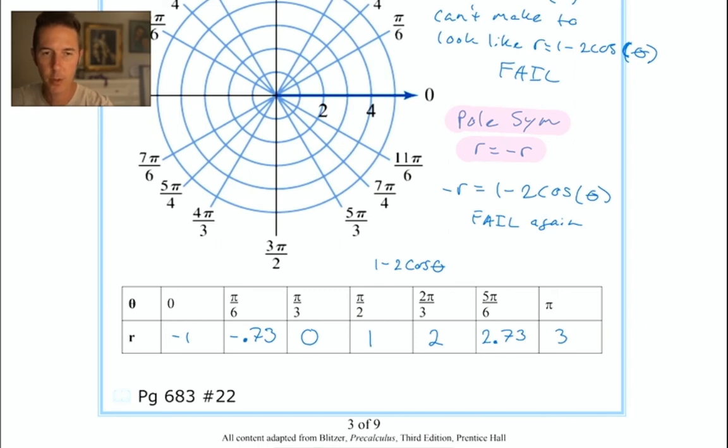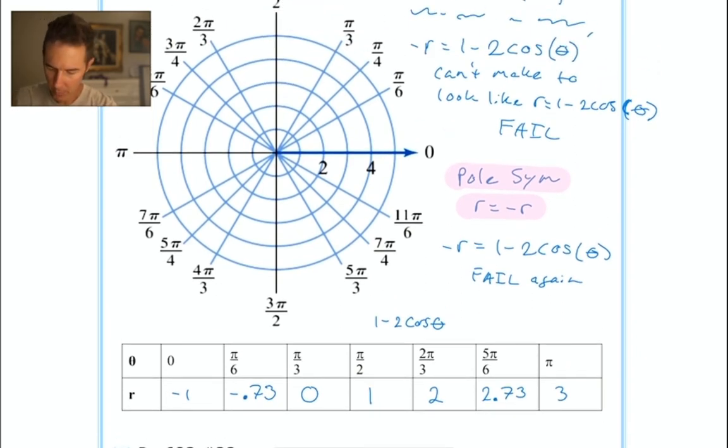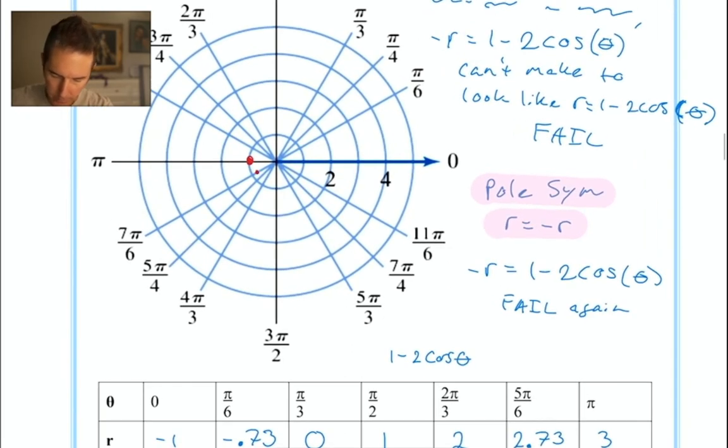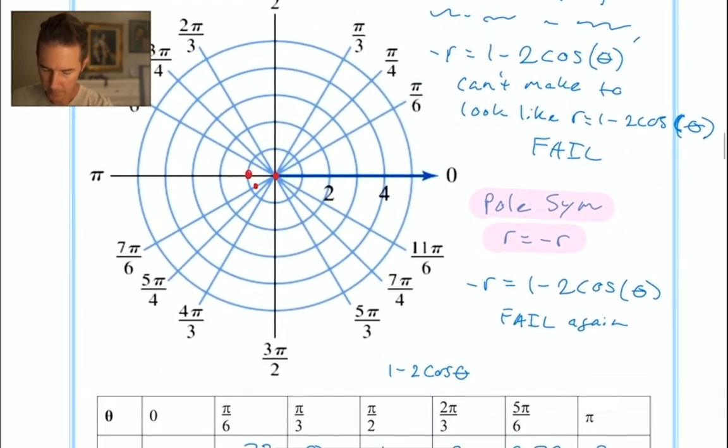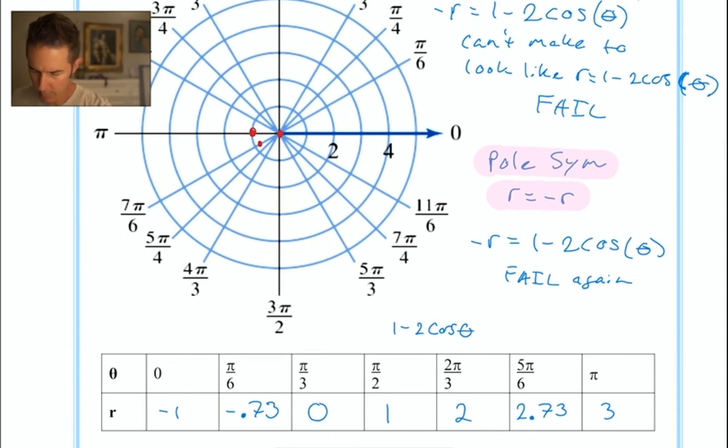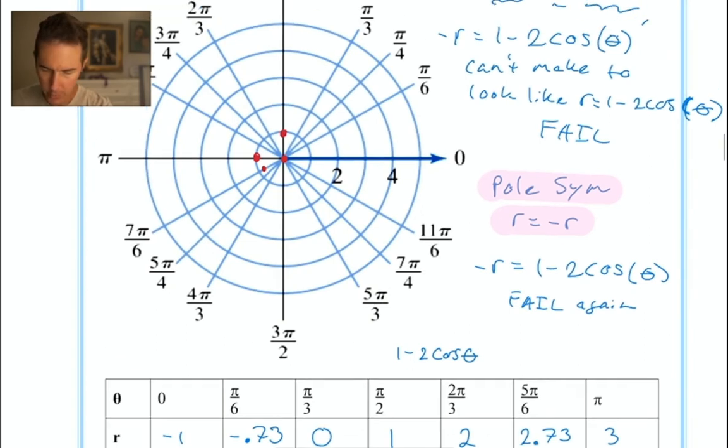I've filled in this table. Let's plot these points. At θ = 0, move -1 unit (toward π). At π/6, come back about 3/4. At π/3, I'm at the pole. At π/2, move up 1 unit. At 2π/3, go out 2 units.